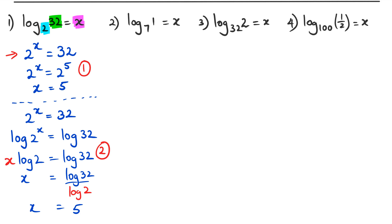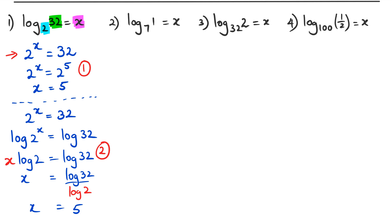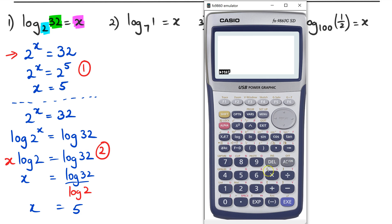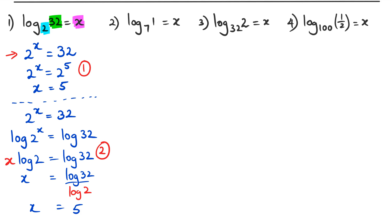For question two, we have log base 7 of 1. You can put this in the calculator straight away. To calculate it, you enter log(1) divided by log(7). That equals 0. So whenever you see log base 7 of 1, you can rewrite it as log(1) / log(7), and the calculator gives 0.